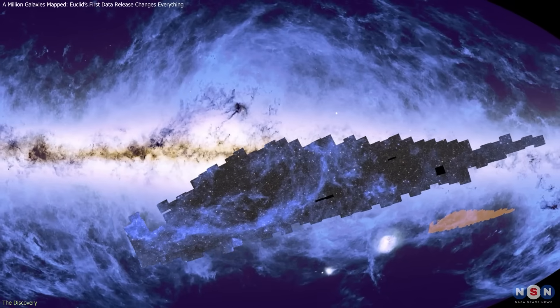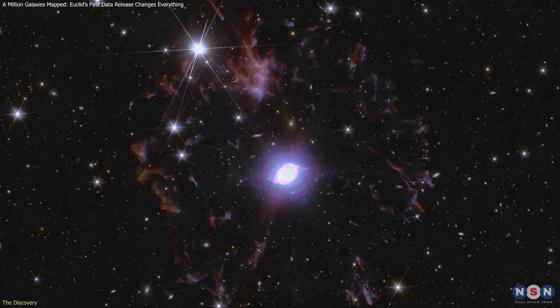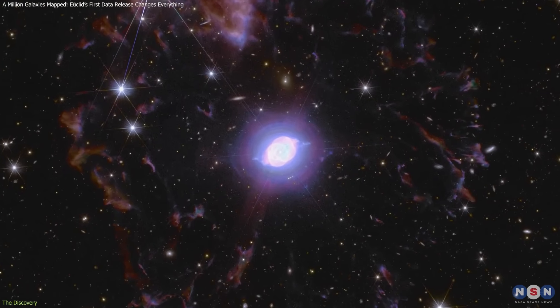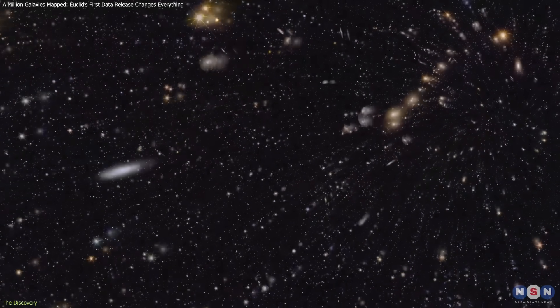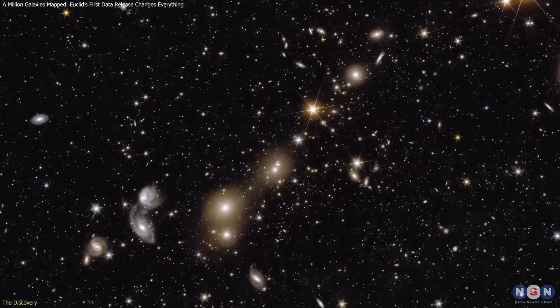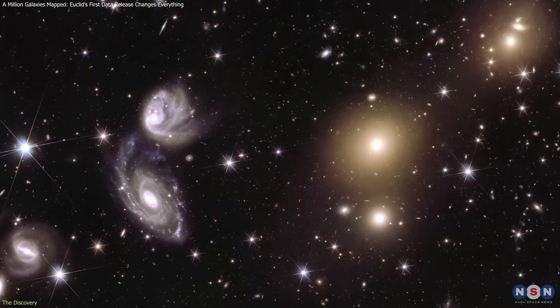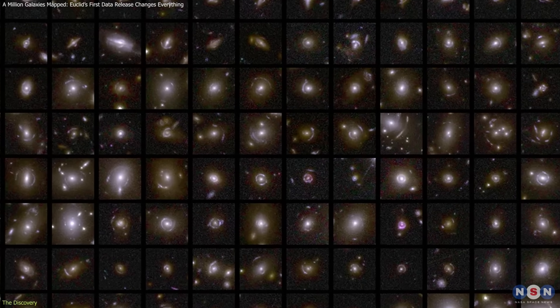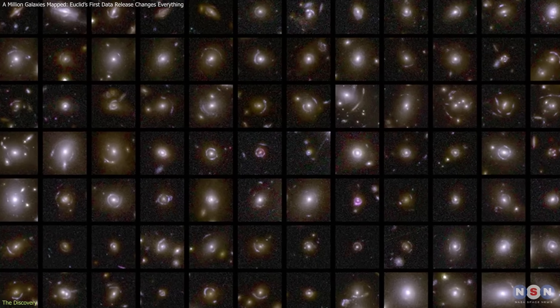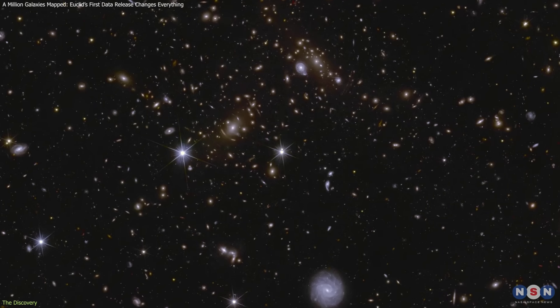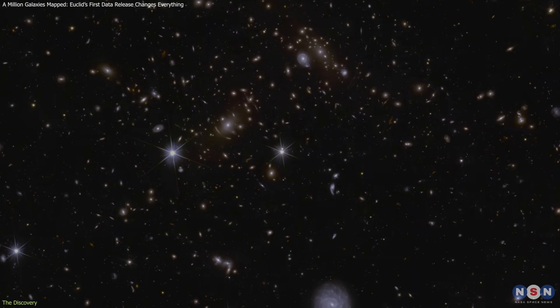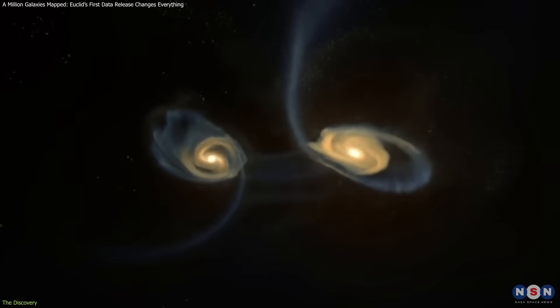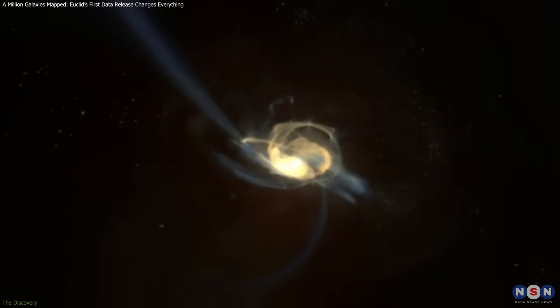Even with this small first dataset, Euclid demonstrates its ability to detect faint structures, trace central features, and capture galaxy populations at a scale needed for both detailed and statistical studies. The discoveries aren't about revealing entirely new categories of objects. They're about providing the depth and consistency required to understand how known processes fit into the larger evolutionary picture.